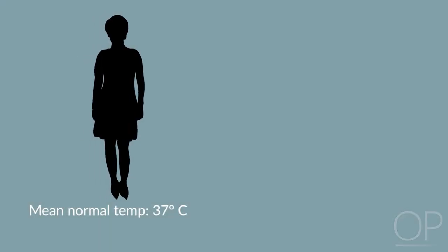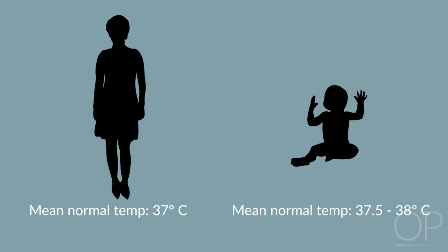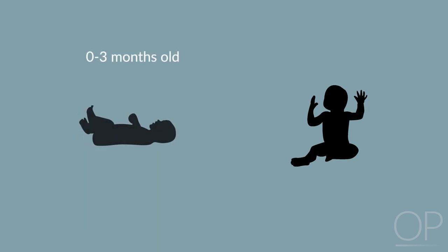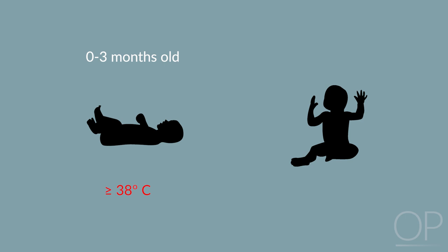The mean normal temperature for adults is 37 degrees Celsius, while children and infants have a higher average temperature. Fever is defined differently in different age groups, in part because of the epidemiology of invasive bacterial infections. In children under 3 months old, we have a lower temperature threshold to trigger an infectious workup; some institutions choose to call a fever 38 degrees Celsius. For older children, the temperature that might trigger an infectious workup may be higher, like 38.5 or 39 degrees.